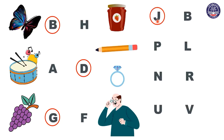Great job, everyone. Let's move on to the next picture. What is this, everyone? This is a pencil. P, P, pencil. Let's say it together: P, P, pencil. Does pencil start with letter P or L? Pencil starts with letter P. Correct. So let's circle letter P.